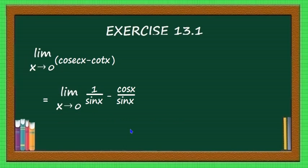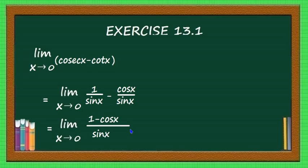The limit x tending to 0 of (1/sin x - cos x/sin x). The LCM is sin x, so this becomes limit x tending to 0 of (1 - cos x)/sin x. Even at this stage, putting x equal to 0 gives (1 - cos 0)/sin 0 = (1 - 1)/0 = 0/0 form.